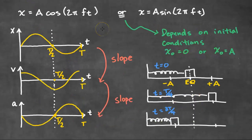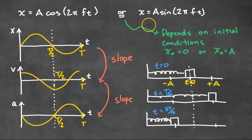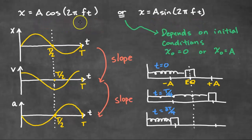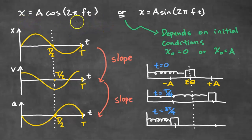Now we're going to use equations to represent the displacement of an object in simple harmonic motion. The first equation is x equals A cosine(2πft), and the second is x equals A sine(2πft). If you know the amplitude, the frequency, and the time, you can calculate the position of the object. Whether you use cosine or sine depends on the initial condition — at time zero, are you at the equilibrium or at the amplitude?